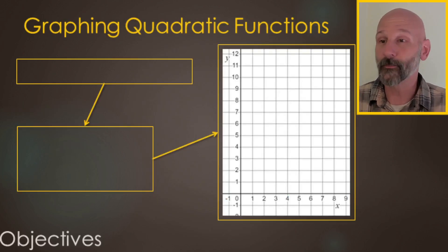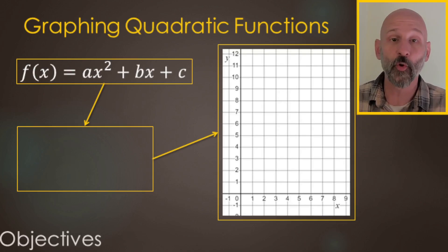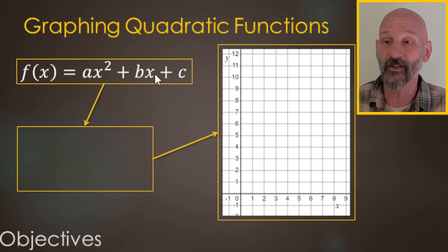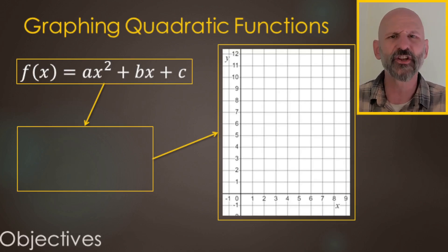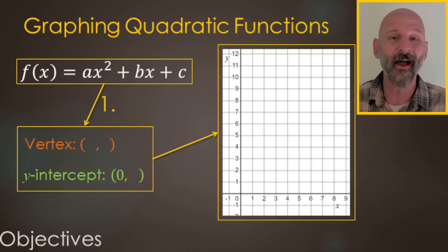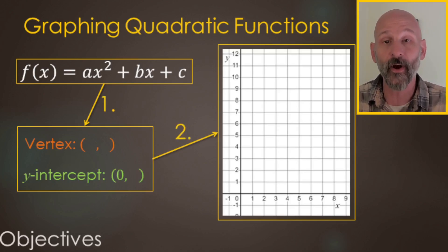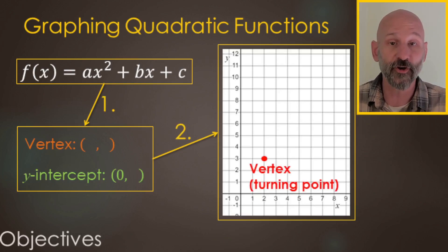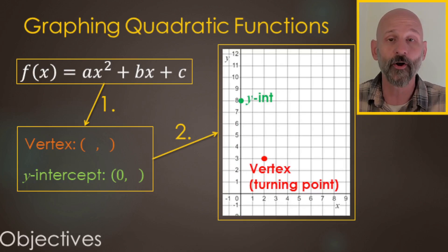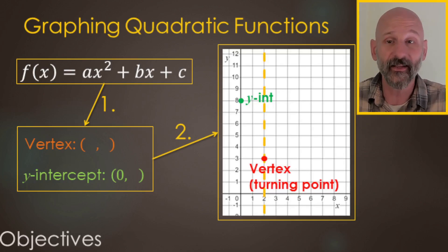Here's the main strategy we're going to use for graphing quadratics. Quadratic functions take the form f(x) = ax² + bx + c — that's the general form. From our quadratic function, we are going to identify or calculate the vertex and the y-intercept, and those go on the graph. We'll put the vertex or turning point on the graph and then the y-intercept. If we're handwriting, we'll also do that reflected y-intercept.